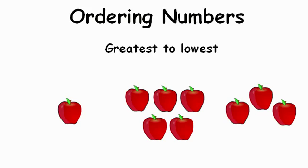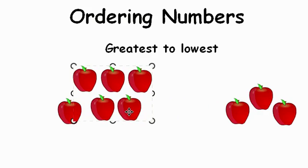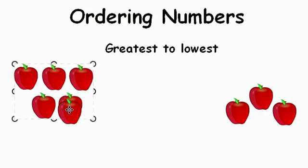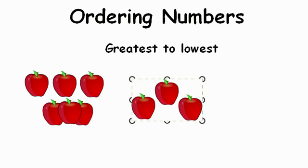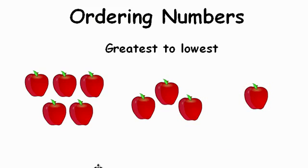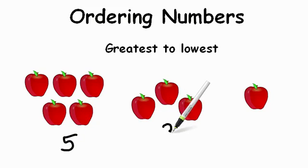So now we have our apples again, and we have one apple, five apples, and three apples, but we need to move them around to make the greatest apple first and the lowest, or least, apple last. So we have one, five, and three. What's the greatest number? That's right, five. So if we're putting it from greatest to least, we're going to put five first. Then what's the next lowest? You're right, three would be the next lowest, and then finally the least would be one. So we have now greatest to least: five, three, one.